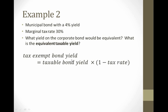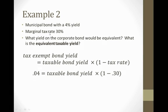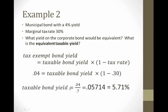We're going to use the same equation, only the information we're given now is a little bit different, so it solves a little bit differently. Using our basic relationship, let's fill in what we know and solve for what we don't know. We know that the tax exempt bond yield is 4%, we know the marginal tax rate is 30%, so we need to solve for our taxable bond yield.